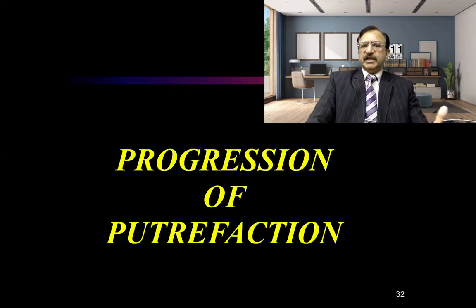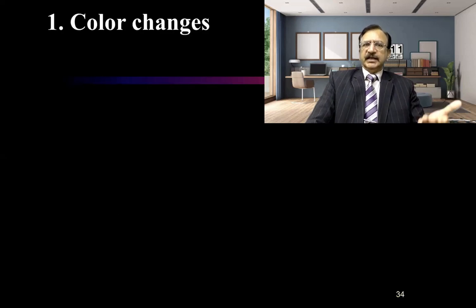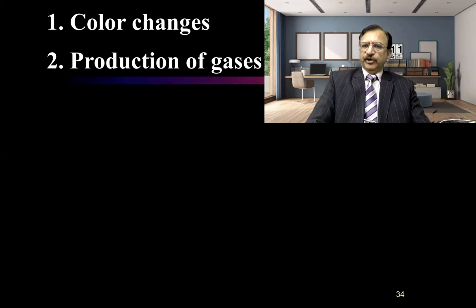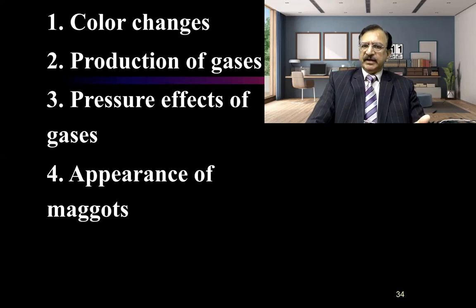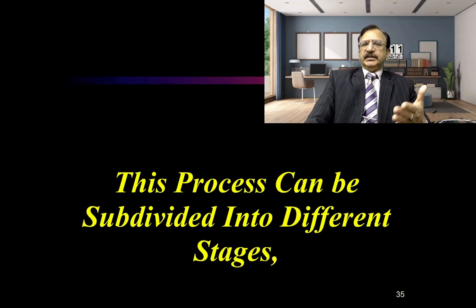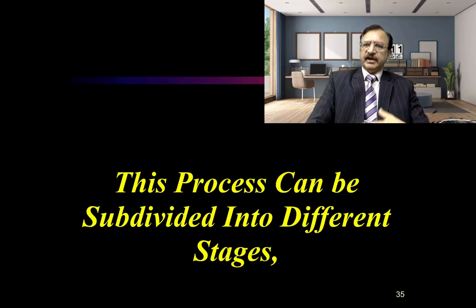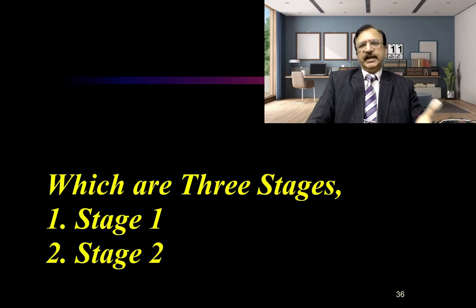Now about the progression of putrefaction. The signs of putrefaction which we observe are the colour changes, production of gases, pressure effects of these gases, and then appearance of maggots which are further destructive, along with other sequels or manifestations. This process can be subdivided into different stages — for our understanding we divide this process into three stages: stage one, stage two, and stage three.